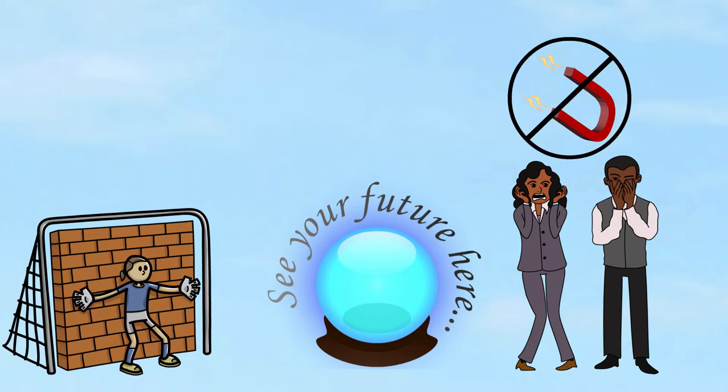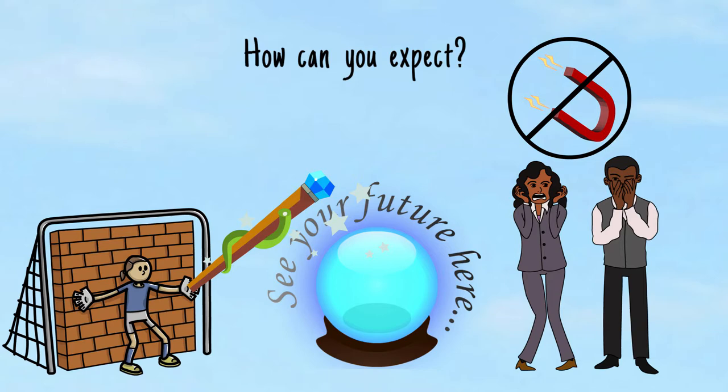If you believe that you're a failure and you will never be good at something, you eventually make it come true. How can you expect to succeed if you hold on to the belief that you're a failure? How can you improve if you believe that you'll never be good at it?